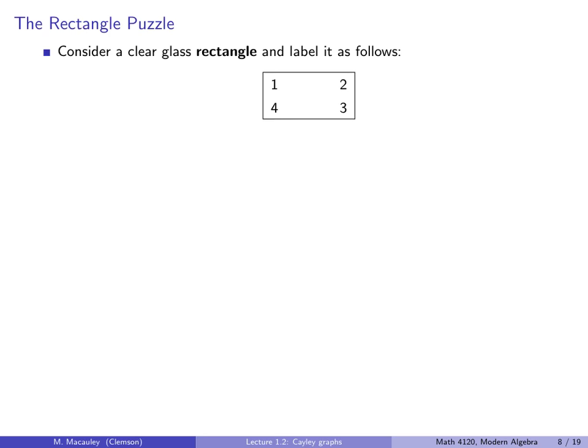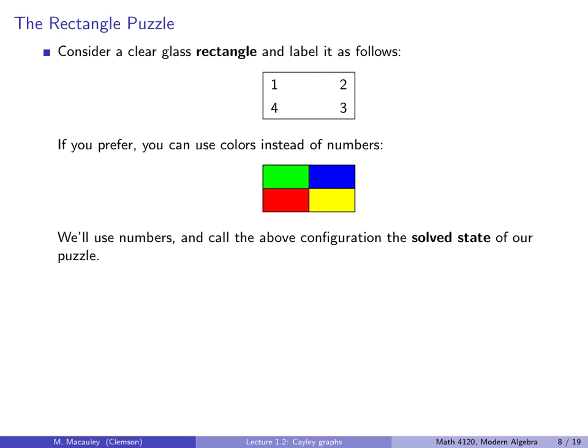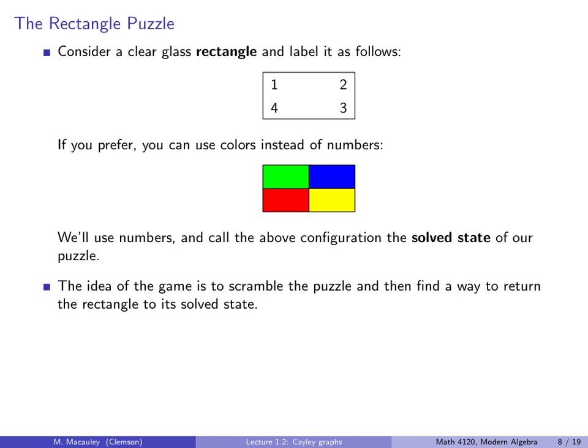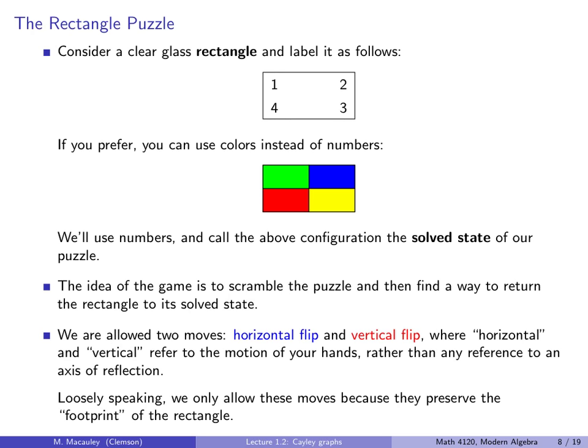So let's try something simpler. Okay, so consider a clear glass rectangle that you can pick up and move around and label it as follows. So put numbers in each of the corners. If you prefer, you can use colors instead of numbers. We'll use numbers and we'll call the above configuration, this one up here, the solved state of our puzzle. Now the idea of the game is to scramble the puzzle and then find a way to return the rectangle to its solved state. So this is like a two-dimensional version of a game like the Rubik's Cube. Now we are allowed two moves. A horizontal flip. That means we have a vertical axis and we flip the thing this way. So the one and the two swap places and the three and the four swap places. And a vertical flip, which means that we flip it along a horizontal axis. So the one and the four swap and the two and the three swap.